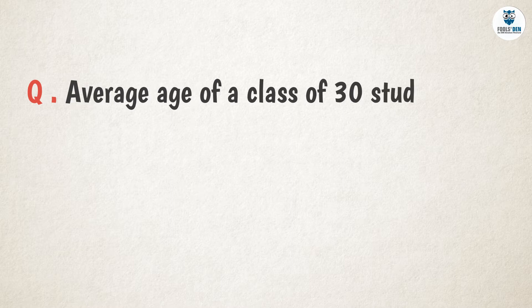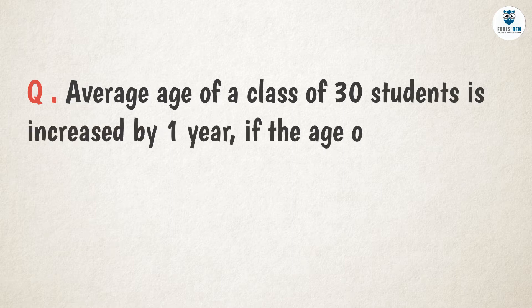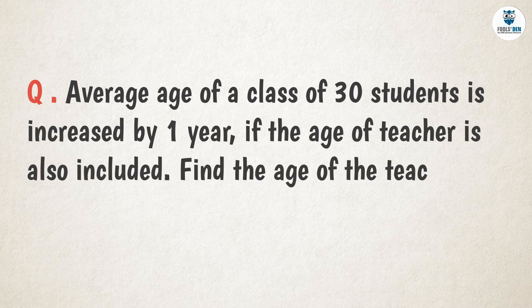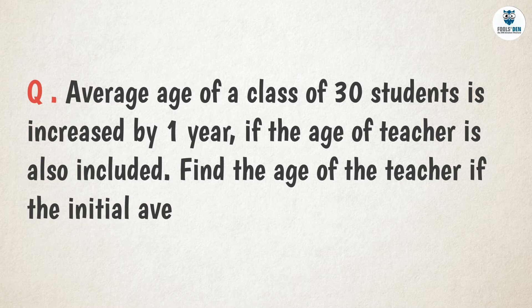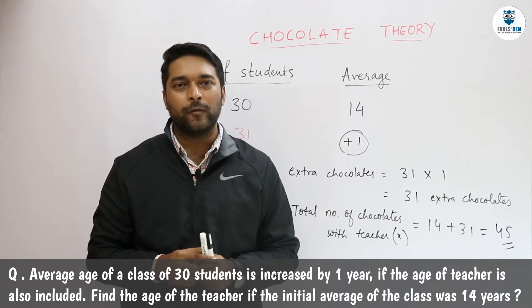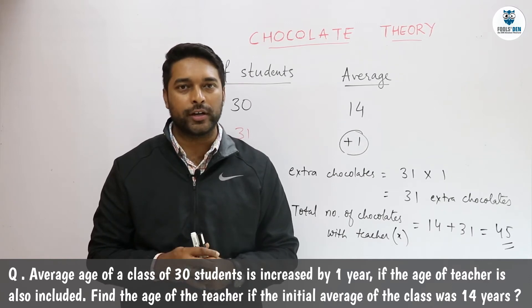Now let us move on to the next question, which says the average age of a class of 30 students is increased by 1 year if the age of the teacher is also included. Find the age of the teacher if the initial average age of the class was 14 years. In this question we will consider age as chocolates.